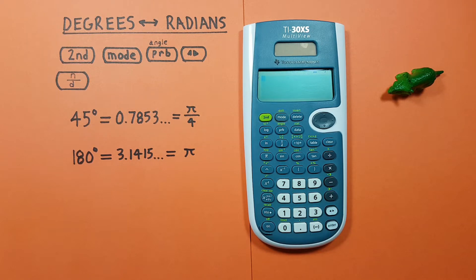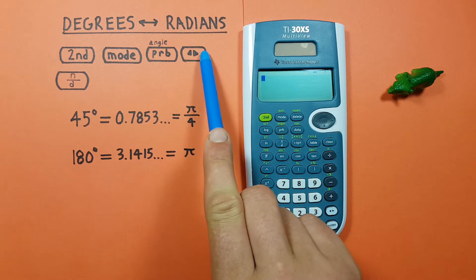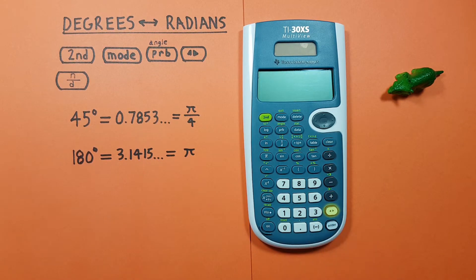The probability key with the second function of angle that looks like this, located here. The conversion key that looks like this, located down here. And the fraction key that looks like this, located here.